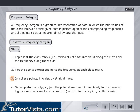Join these points in order by straight lines. To complete the polygon, join the point at each end immediately to the lower or higher class mark as the case may be at zero frequency, i.e., on the x-axis.